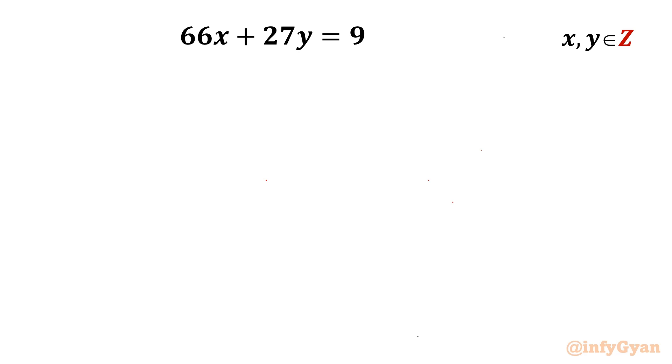Welcome back to Infigyan my dear friends. In this video we are going to take up one very interesting linear Diophantine equation with the help of Euclidean algorithm. The given equation is 66x plus 27y equal to 9. We have to find out integer solutions. So let me divide our procedures in a few steps.